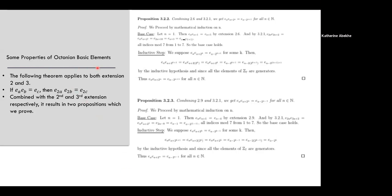So we went on to instead look into these elements. We find this very nice theorem: eₐ, eᵦ, eᶜ. This theorem gave us these two propositions when we combined that theorem with extension two and with extension three. So we're actually just going to look at one of them. We'll look at the first one because they're very, very similar.